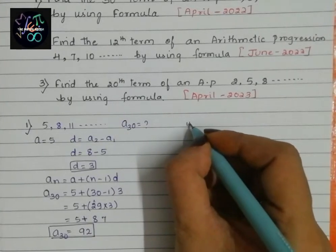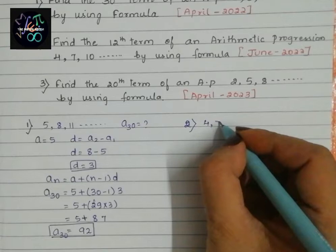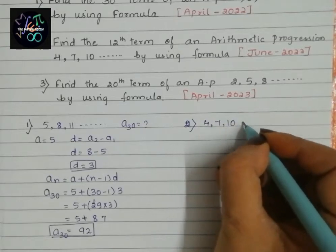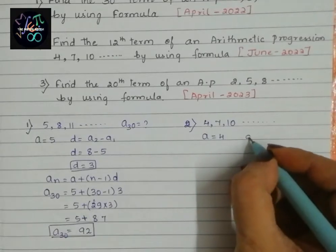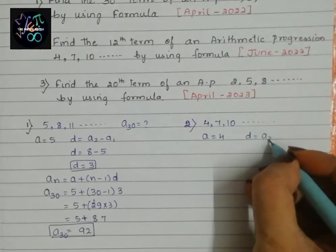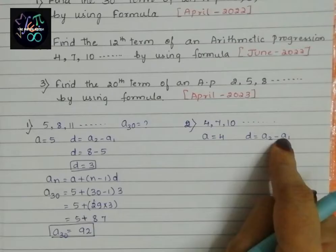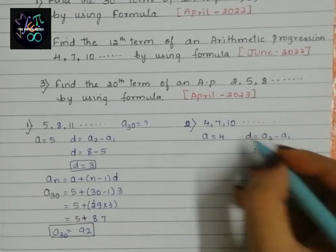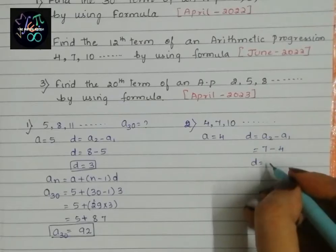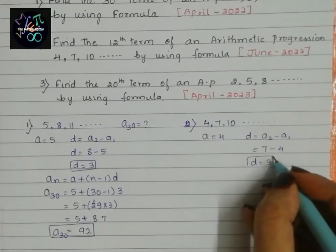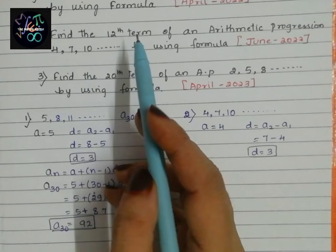The second question: the AP is 4, 7, 10. The first term A equals 4. D equals second term minus first term, so D equals 7 minus 4, which is 3. Here again we got D as 3.